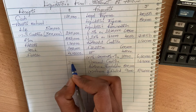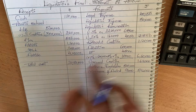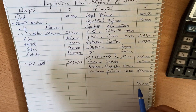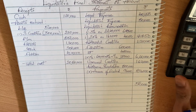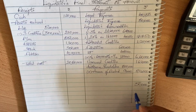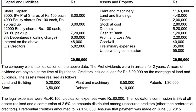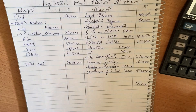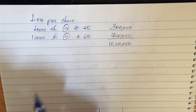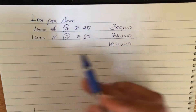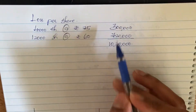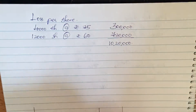Total amount available is twenty lakhs eighty thousand. After all payments, the final balance remaining is fifty thousand for equity shareholders. There are 4,000 shareholders at 75 paid up and 12,000 shareholders at 60 paid up — total paid-up capital: 4,000 at 75 is three lakhs, and 12,000 at 60 is seven lakh twenty thousand, so total is ten lakh twenty thousand.